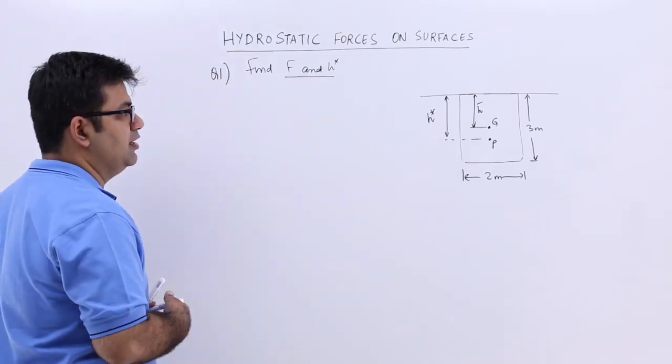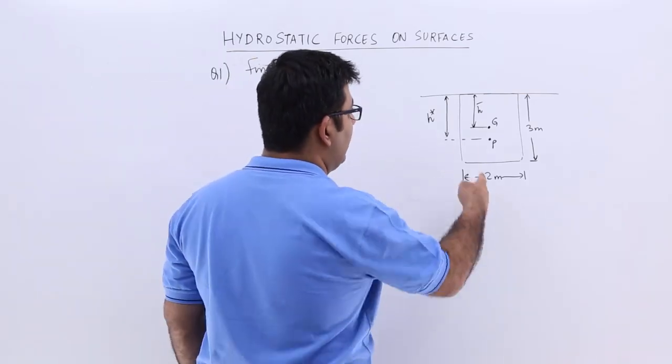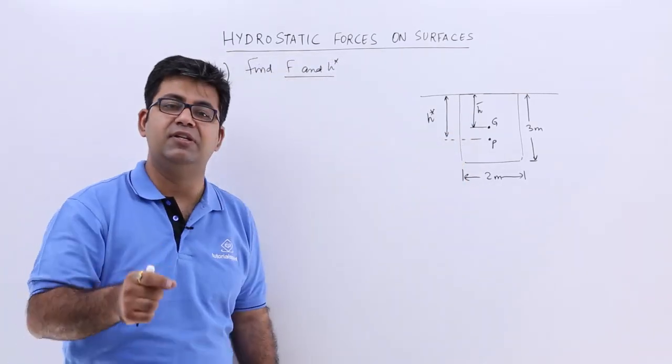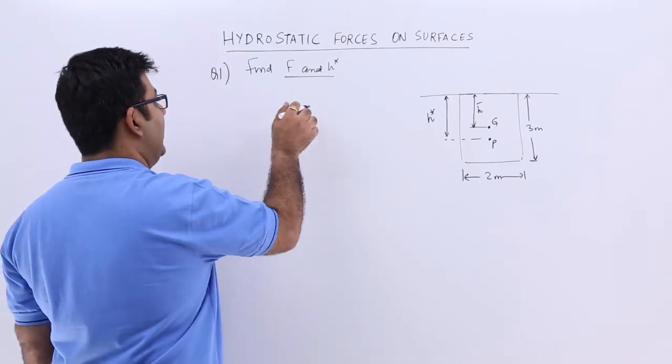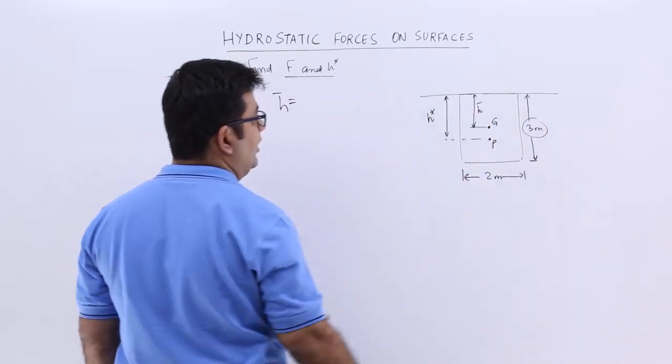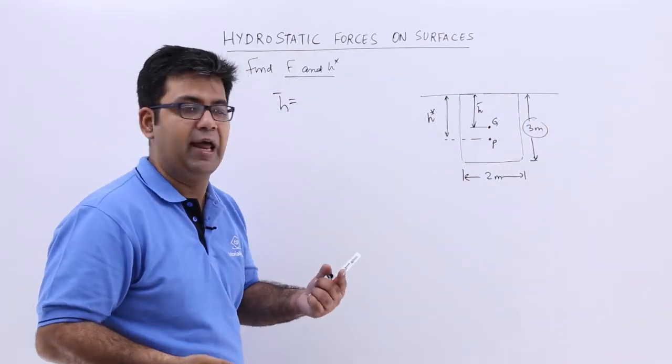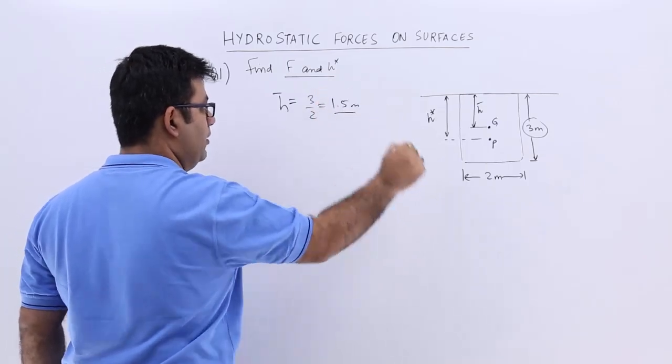So it is a very simple scenario. First let's understand and find out the value of h bar. h bar is the distance of the centroid of the surface from the free surface, so you will have h bar as half of this dimension because it is a rectangle, so you will have 3 by 2 which is 1.5 meters.